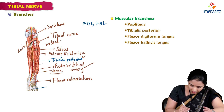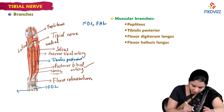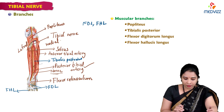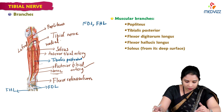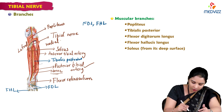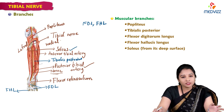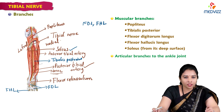Here is the flexor digitorum longus tendon, and the one going to the great toe is the flexor hallucis longus tendon. These are also supplied by the tibial nerve. It also supplies soleus — which is removed here to expose the tibial nerve. As it crosses the ankle joint, it gives articular branches to the ankle joint.